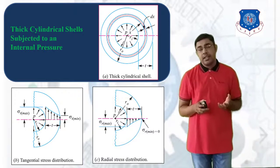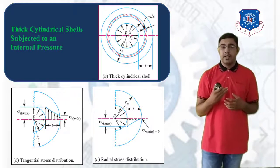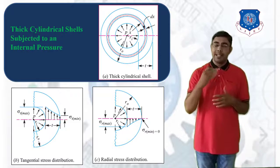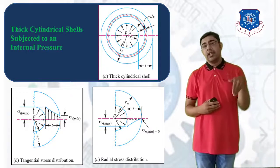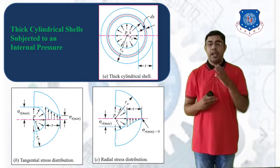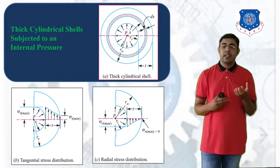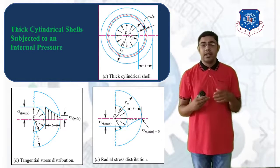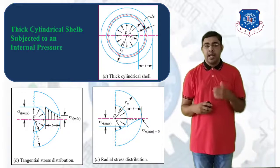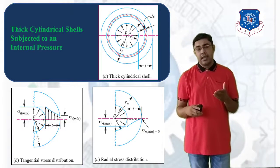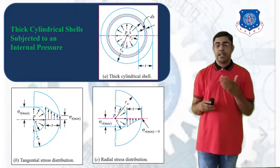Now consider the radial stress distribution. The maximum radial stress occurs at the inner surface of the cylindrical cell and gradually decreases, becoming zero at the outer surface. The radial stress is compressive, so sigma R is maximum at radius Ri and zero at the outer surface.